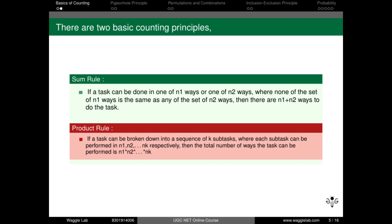The basic counting principles are the sum rule and the product rule. This is a very symbolic concept. If there are n ways of doing one task, we use an addition operation — first way plus second way plus third way, and so on up to the nth way of doing the task. That is the sum rule. For the product rule, we subdivide one task into subtasks.